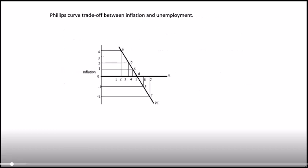There's a diagram showing the PC curve with inflation on the vertical axis and unemployment on the horizontal axis. The PC curve is downward-sloping from left to right. At inflation of 4%, unemployment is 2% at point A. If inflation drops to 2%, unemployment increases to 3.5%, and if inflation drops further to 1%, unemployment increases to 4%.